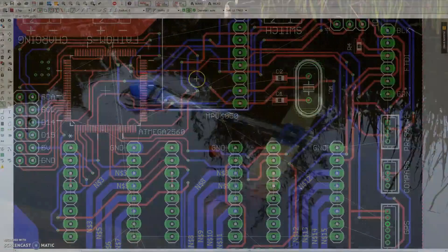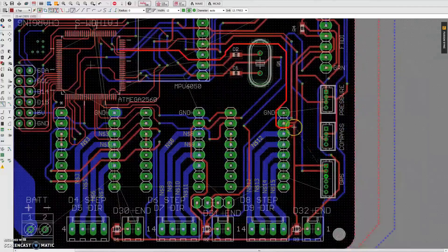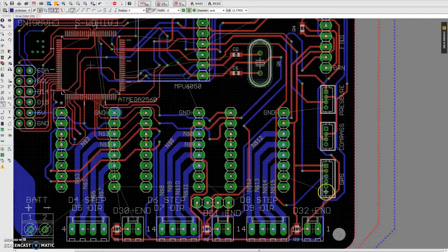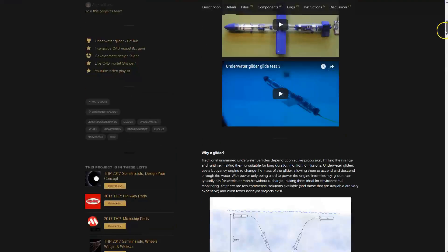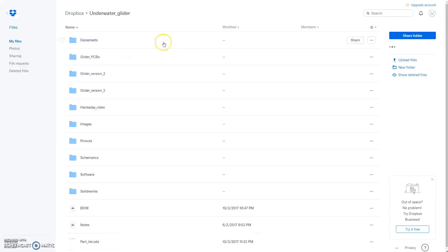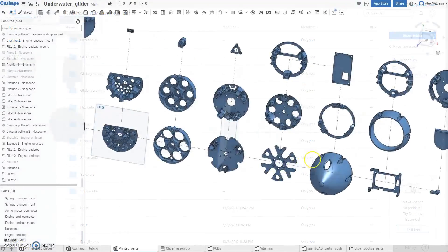The entire design is completely open source, with the PCBs being designed in Eagle, and all software being kept up to date on Github. On the glider's Hackaday page, there is a Dropbox link to the Live Development folder, containing all files related to the glider.